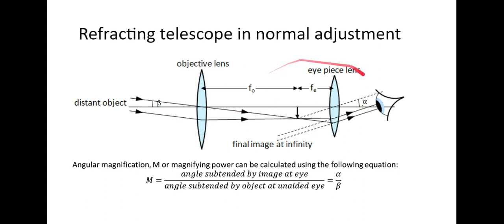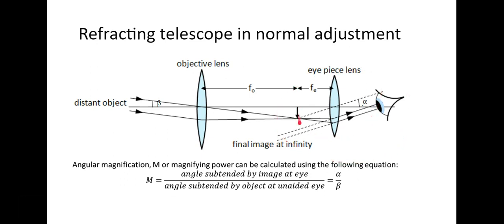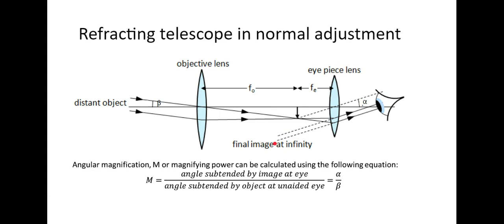Now looking at the right-hand side of the diagram - what was the image is now the object. If we draw a ray going through horizontally it goes through the focal point, and the other ray goes in a straight line. These two rays end up travelling parallel to each other, so the image is at infinity. Therefore when you're looking through the telescope your eyes are focusing on infinity, just like they would be if you were looking at stars in the sky.